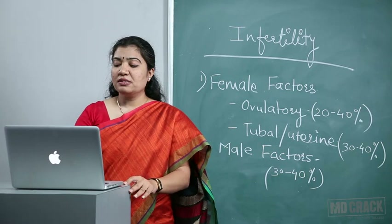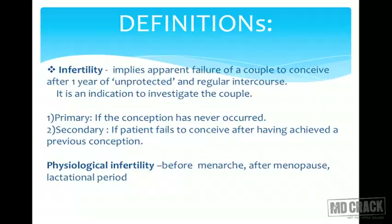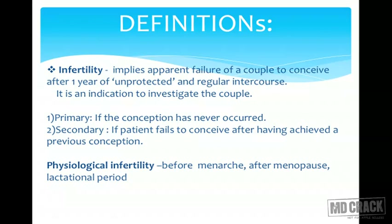Welcome to this big topic of infertility. By definition, infertility is an apparent failure of a couple to conceive after one year of unprotected and regular coitus. The key words here are 'unprotected' — meaning the couple is together but not using any contraceptives — and 'regular intercourse,' meaning they should be staying together for that one year with normal coital frequency. If they fail to conceive over one year, we call it infertility and begin investigating.